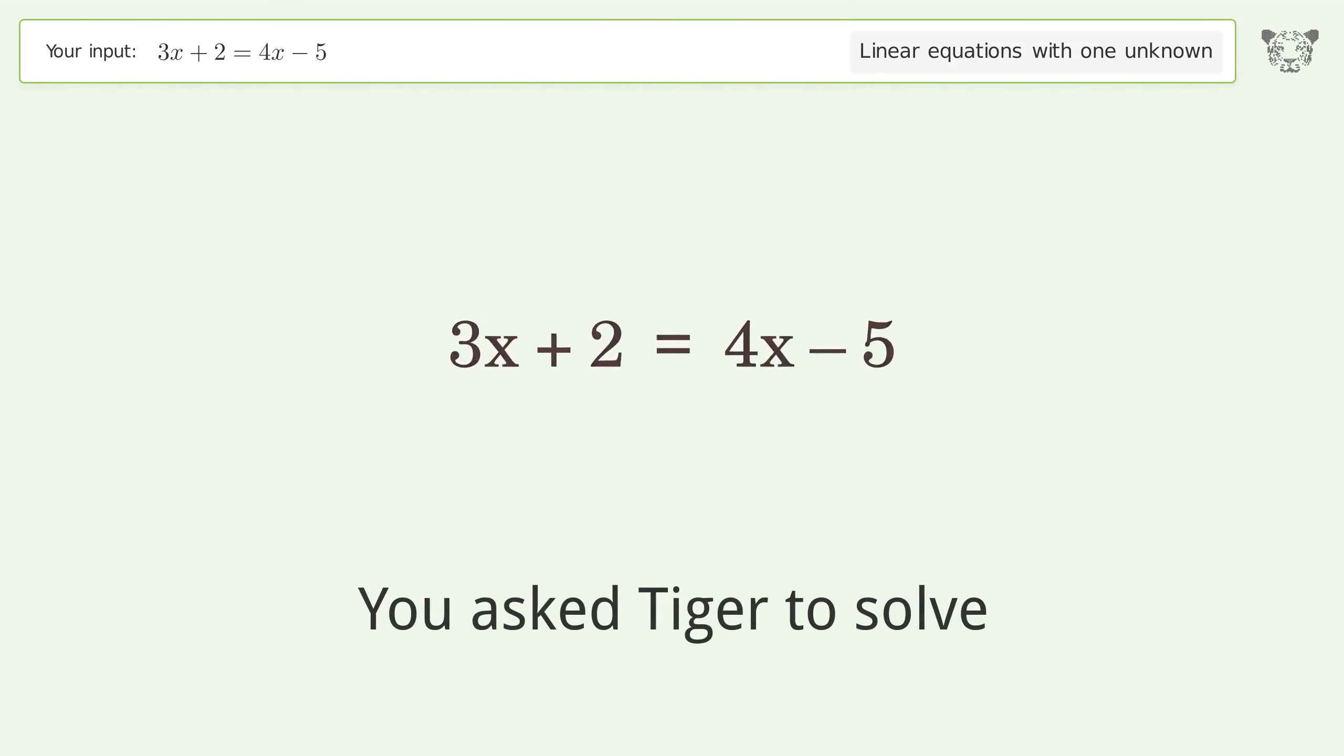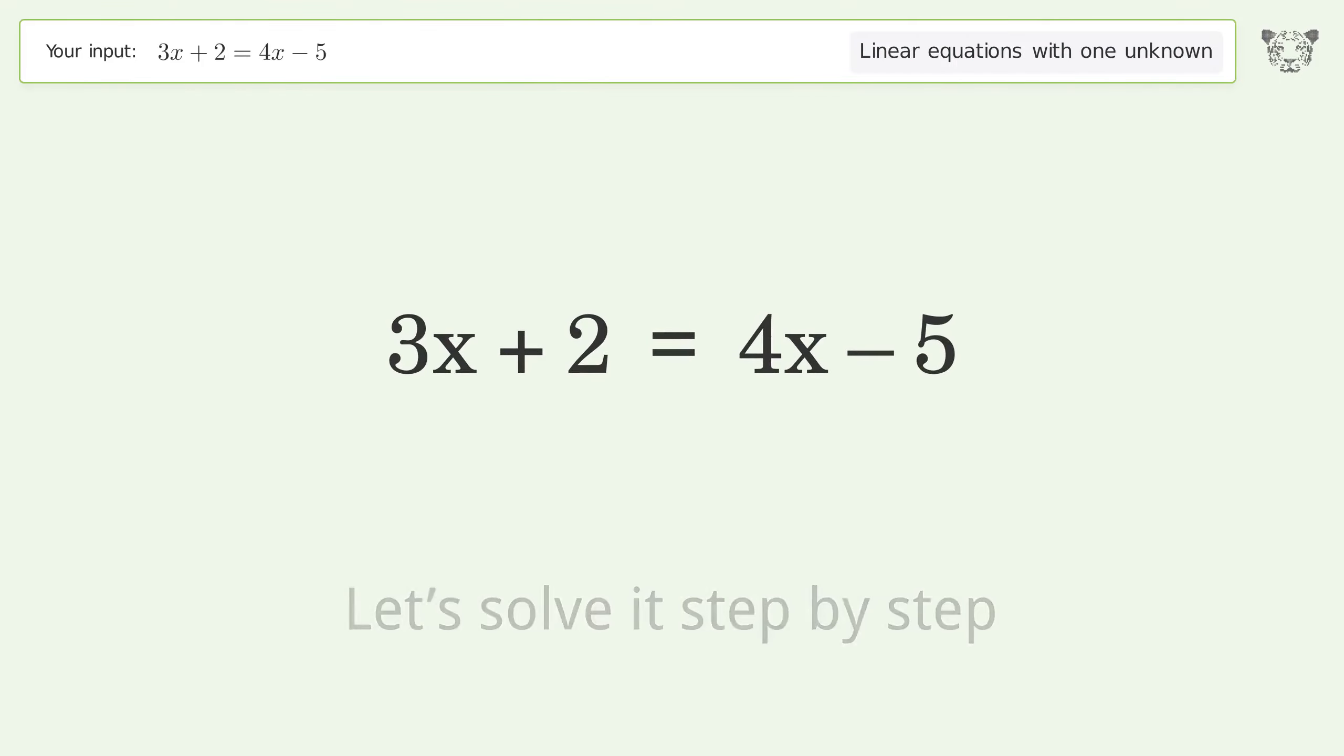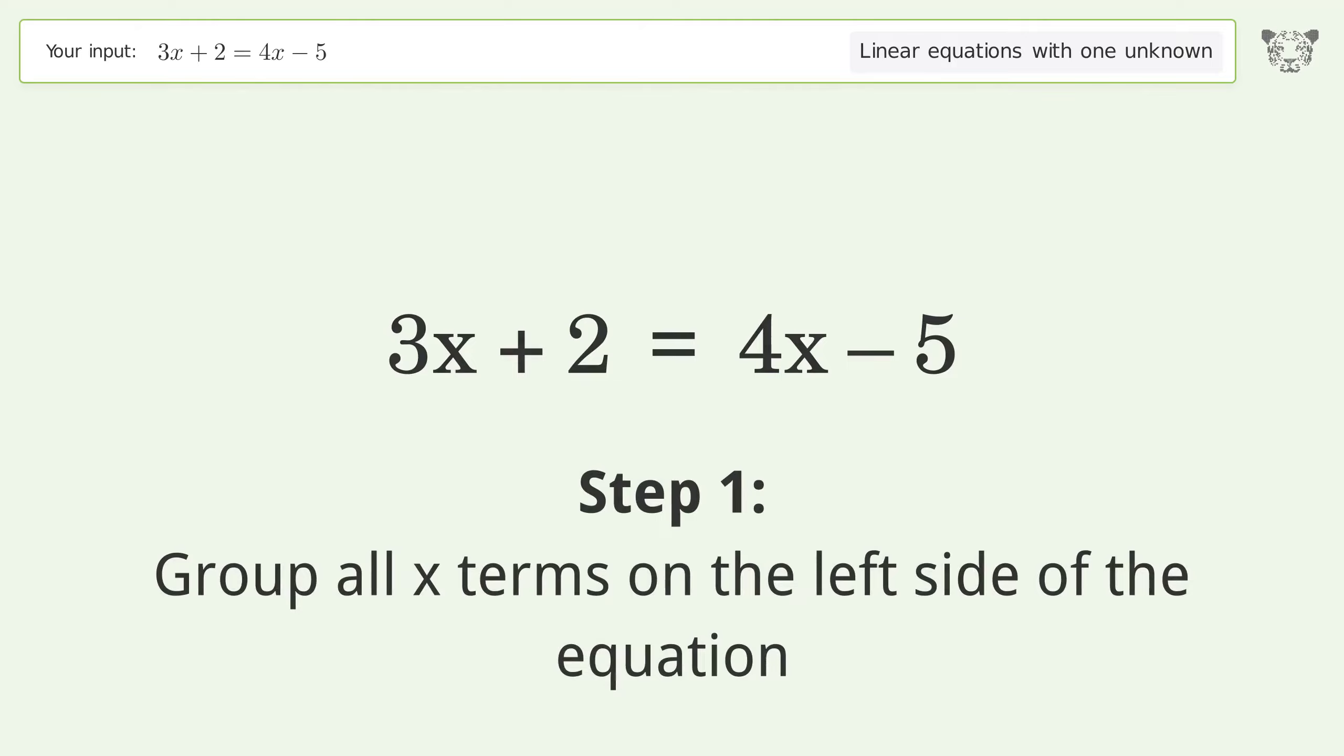You ask Tiger to solve this. This deals with linear equations with one unknown. The final result is x equals 7. Let's solve it step by step. Group all x terms on the left side of the equation.